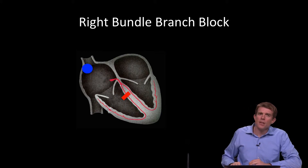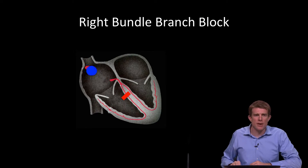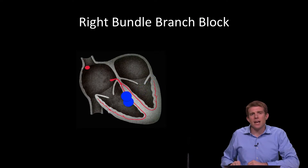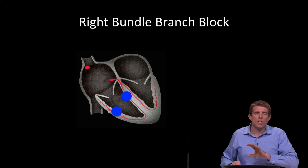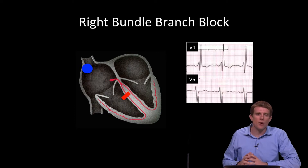But if there's a bundle branch block, that's going to change. What we see in a right bundle branch pattern is that the electricity goes from the sinoatrial node to the AV node and then down our bundle branches, but it gets blocked on the right side. So the left side depolarizes, and then slowly it will come across from the left side to the right side and depolarize the right side of the heart.